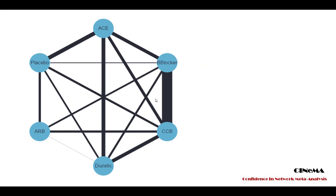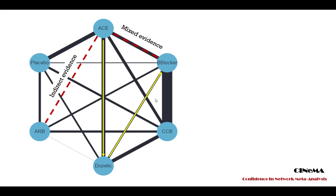When evaluating the evidence from a network it is of utmost importance to look at the evidence graph. This graph shows that we have a well-connected network. The comparison of ACE versus ARP is performed using indirect evidence only. All other comparisons have both direct and indirect evidence, which we will call mixed evidence from now on.